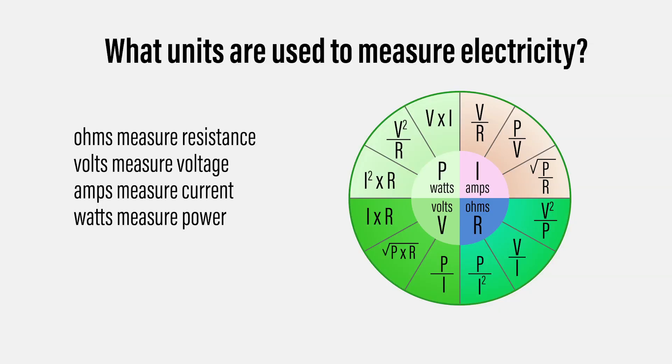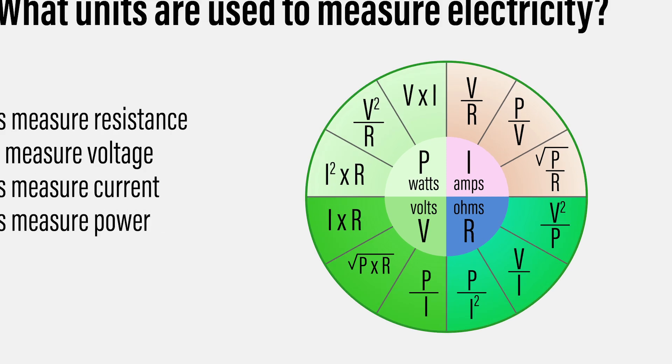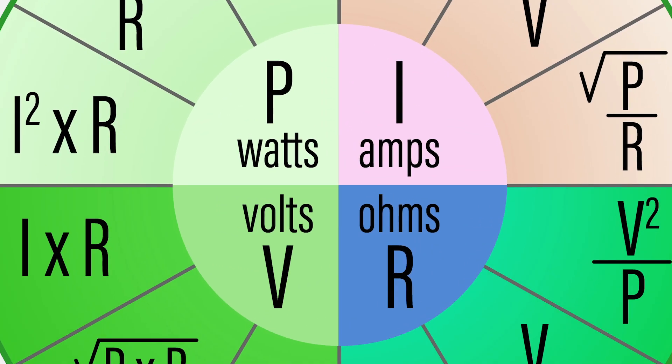Today we're asking: what units are used to measure electricity? There are four units used to measure electricity. Ohms measures resistance, volts measures voltage, amps measures current, and watts measures power.